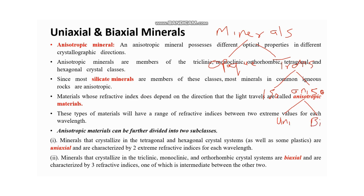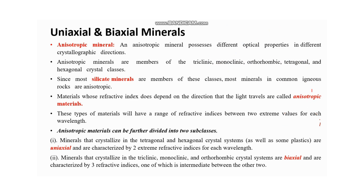Anisotropic minerals can either be uniaxial or biaxial. Biaxial means two optic axes; uniaxial means one optic axis. All anisotropic minerals crystallize in triclinic, monoclinic, orthorhombic, tetragonal, and hexagonal systems. Minerals crystallizing in tetragonal and hexagonal are called uniaxial, and those crystallizing in triclinic, monoclinic, and orthorhombic are called biaxial.